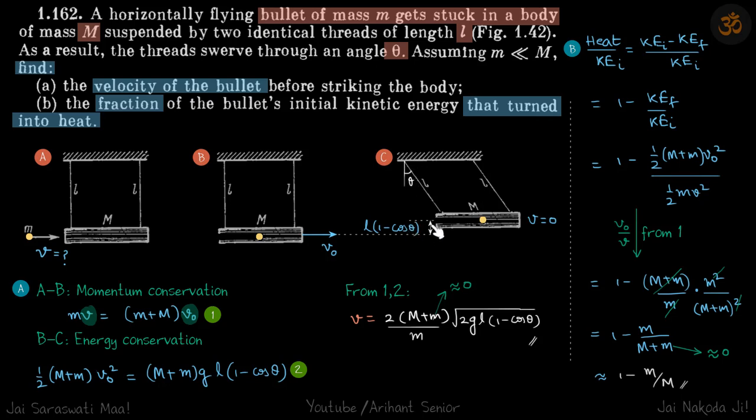This whole setup rises by L(1-cos θ). Initially it was at L, now it is at L cos θ. So it has gained height of L - L cos θ. So (M+m)gL(1-cos θ).